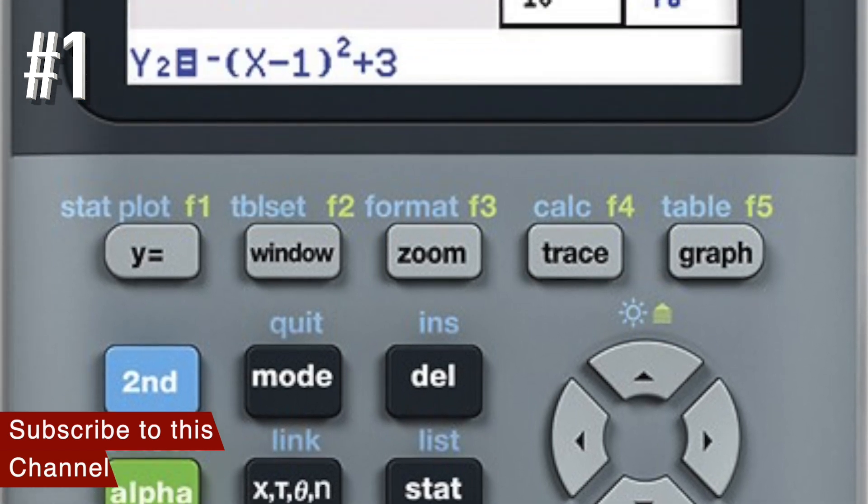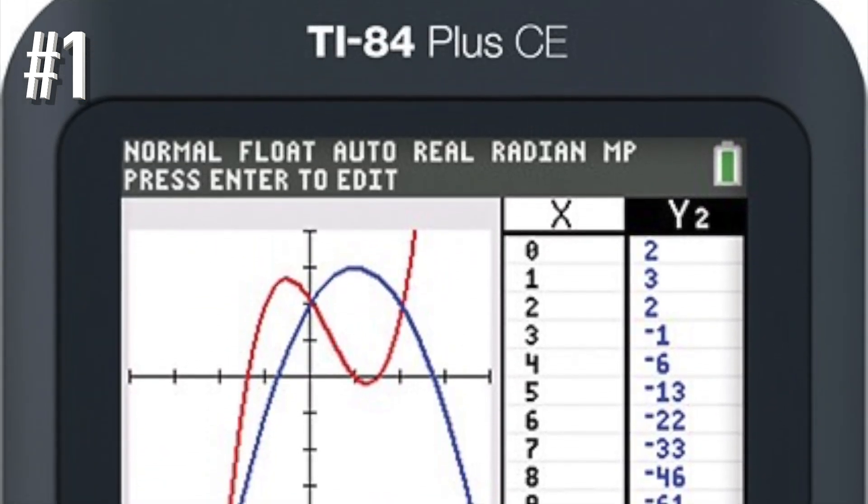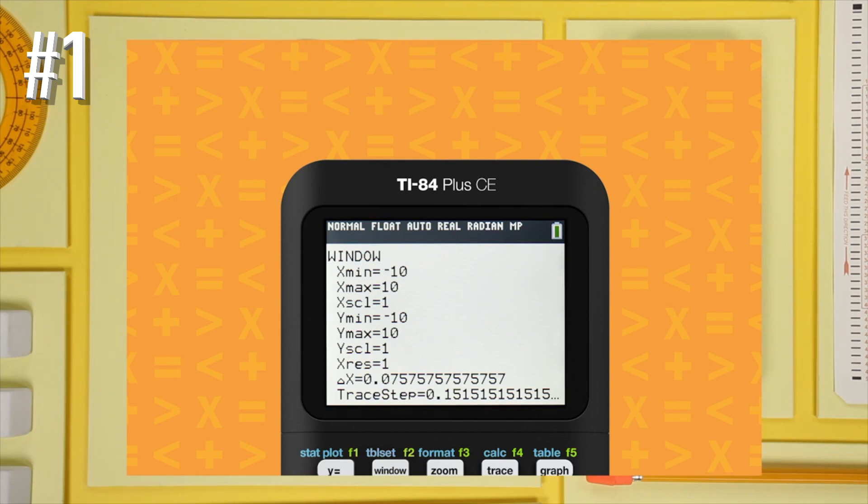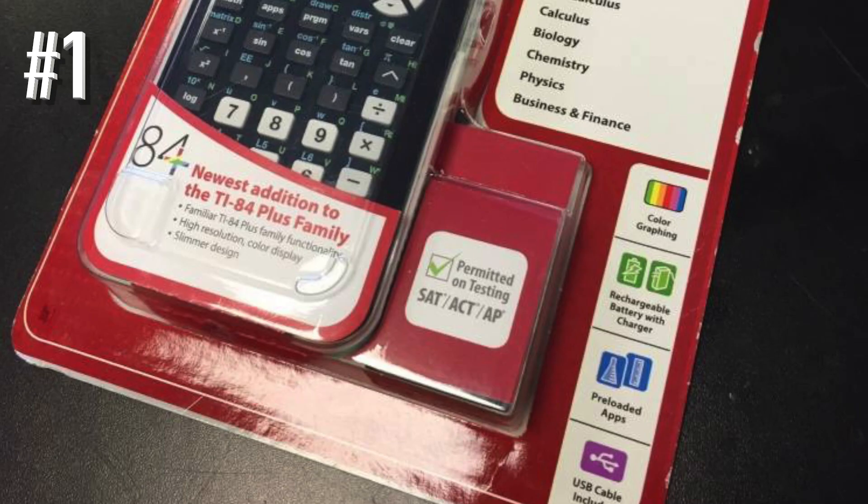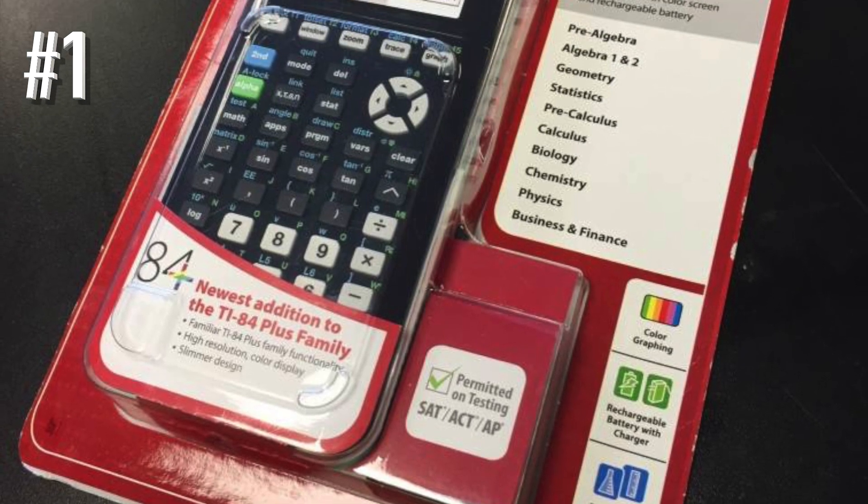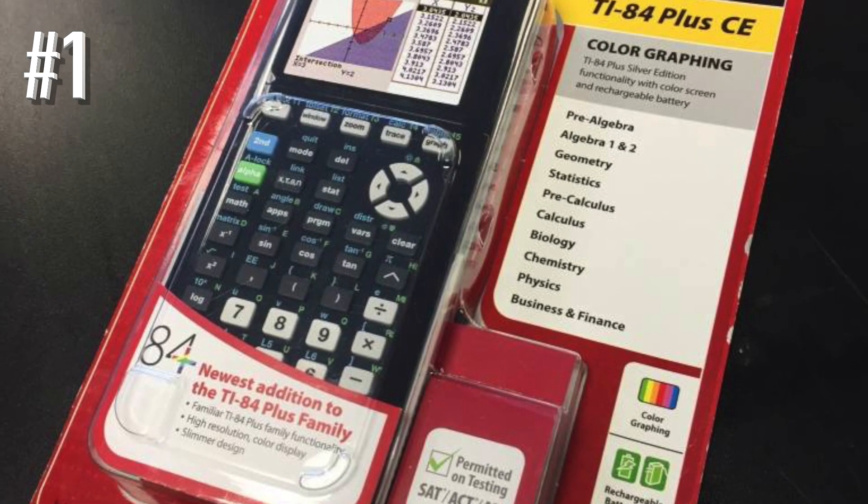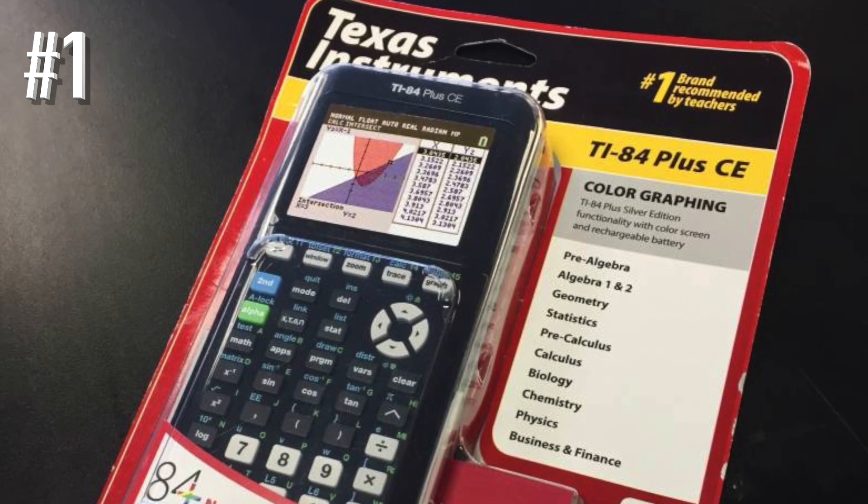The TI-84 Plus CE includes a rechargeable battery that keeps you from having to head to the store to stock up on batteries. It also means you need to make sure your graphing calculator is fully charged before class and especially before heading out for standardized college testing. The calculator is approved for PSAT, SAT, ACT, and AP exams.